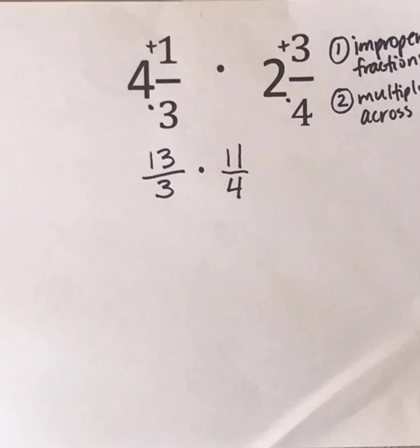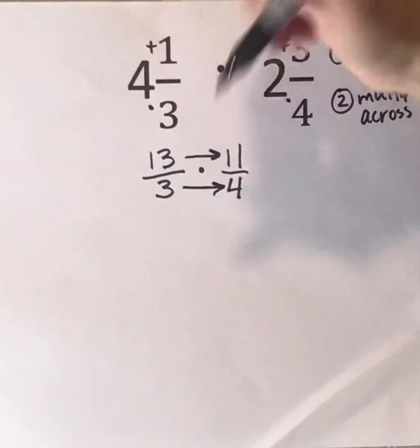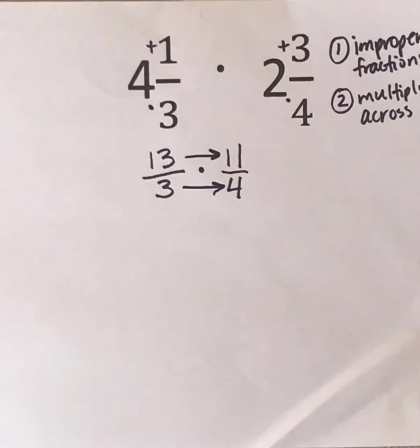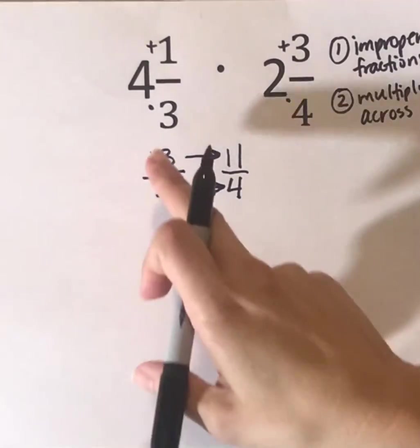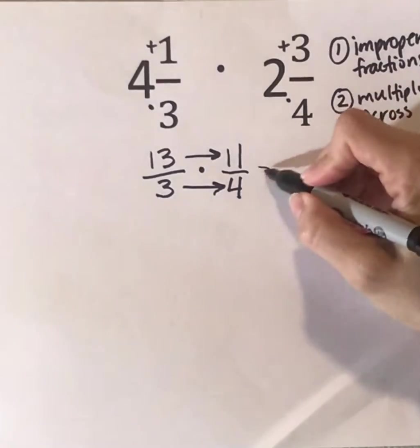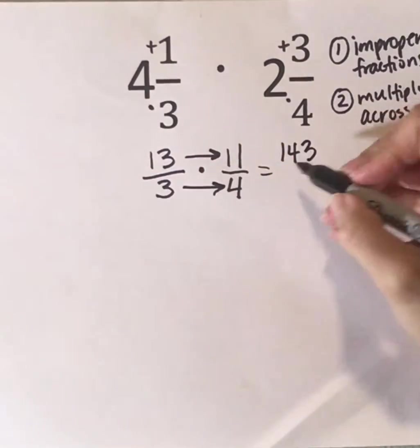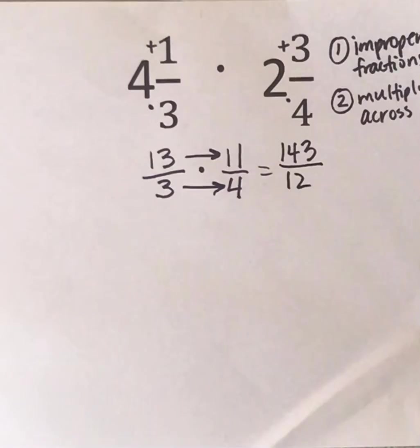So for this particular problem, I am not able to cross simplify. So I'm going to just multiply straight across. So to do that, I'm going to multiply 13 times 11, which is 143. Next, I'm going to do 3 times 4, which is 12.